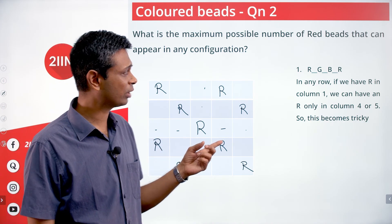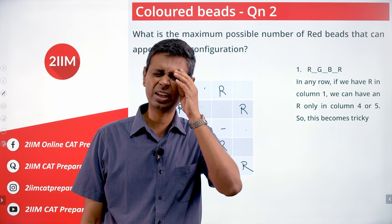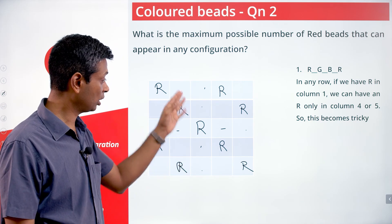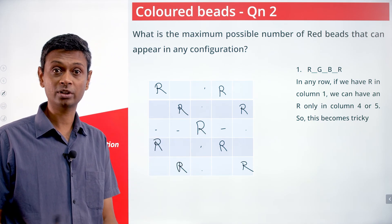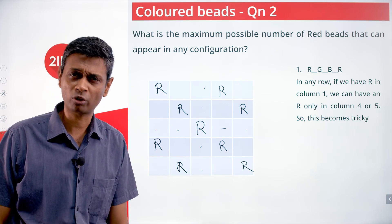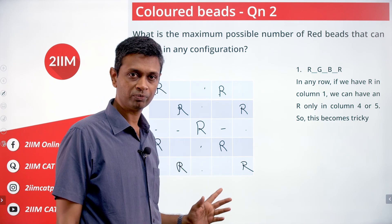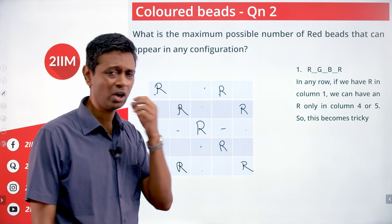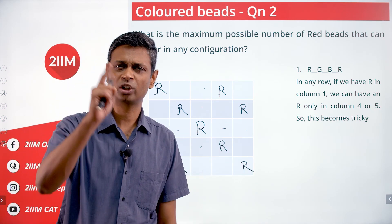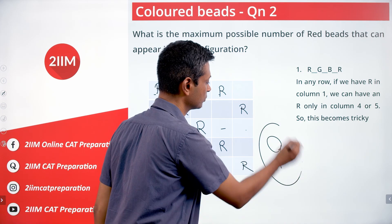We can put two reds in a row and two reds in a column, giving a conceivable maximum of 10. But once we place the best-case scenario — positions 1,4 and 2,5 for every row and column — every row and column is already filled. The only remaining positions can hold just one red each. So the maximum number of reds we can actually place is nine, not ten.